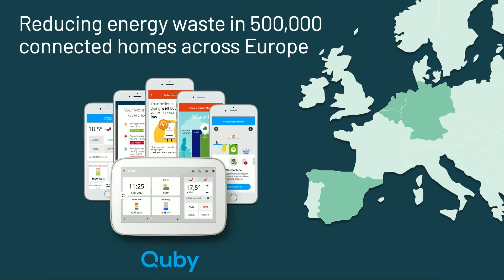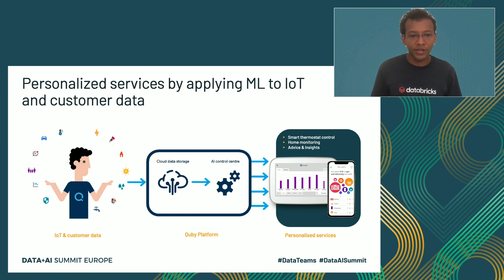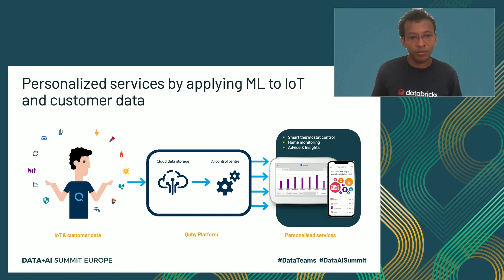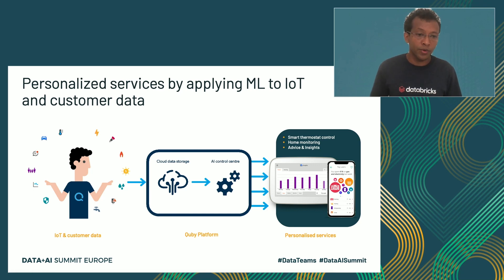Tone is now available to over 500,000 customers' homes in four different big countries in Europe. We collect a huge amount of data from different sensors, including meter readings from gas, electricity, water, and also solar production. Tone is not only a smart thermostat device, but also an IoT hub within the customer's home. Tone can be connected to different appliances at home, for example smoke detectors as well as lights. We also collect customer profile data, customer information, and mobile app click data.